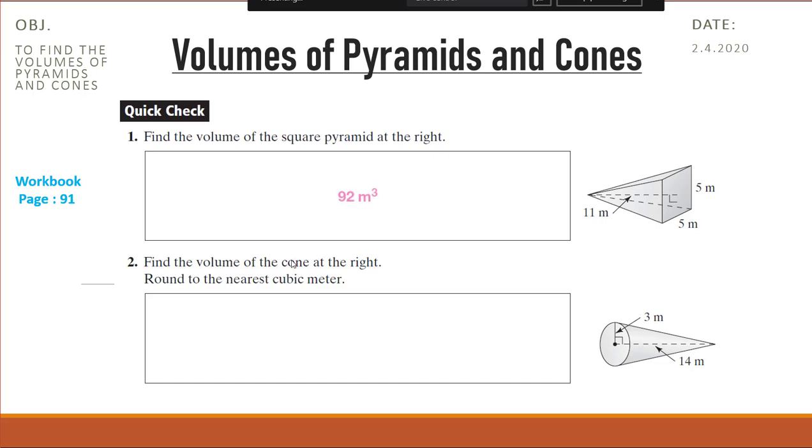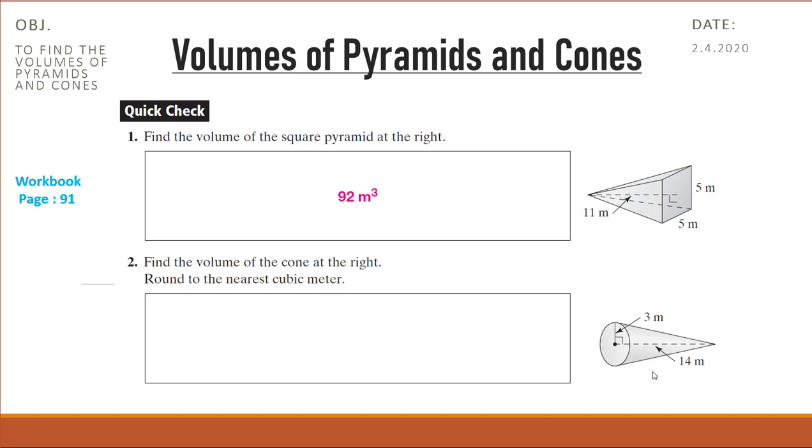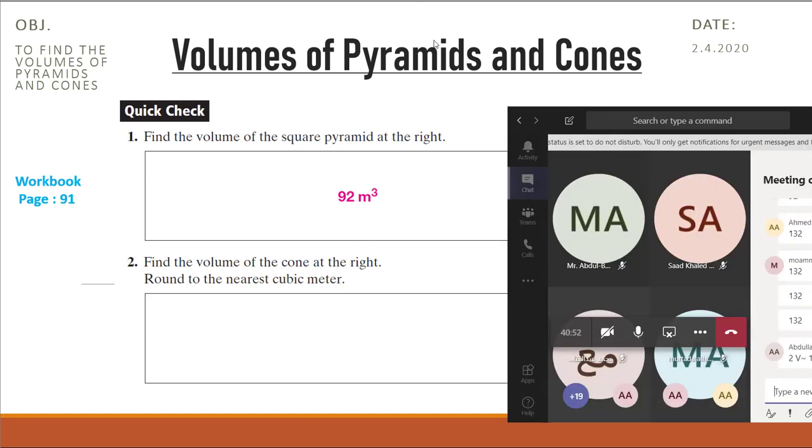Okay, the first one, the answer is 92 cubic meters. And that's because the base area is 5 squared which is 25. So we're going to multiply 25 by the height 11 by one-third. Don't forget that the rule is one-third base area multiplied by height. Okay, and the second one, the radius is three. Anyone? No one got the answer? Okay. Yes, great, good Abdullah.